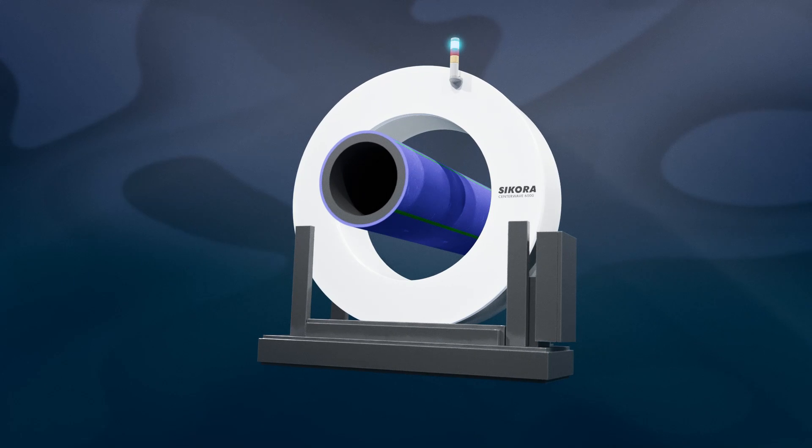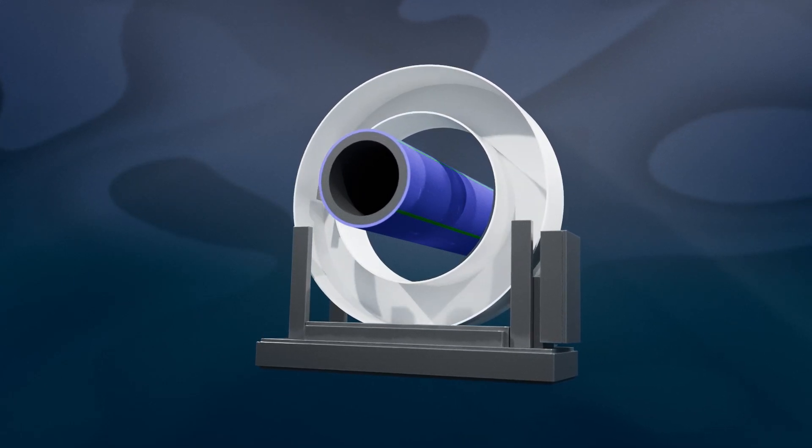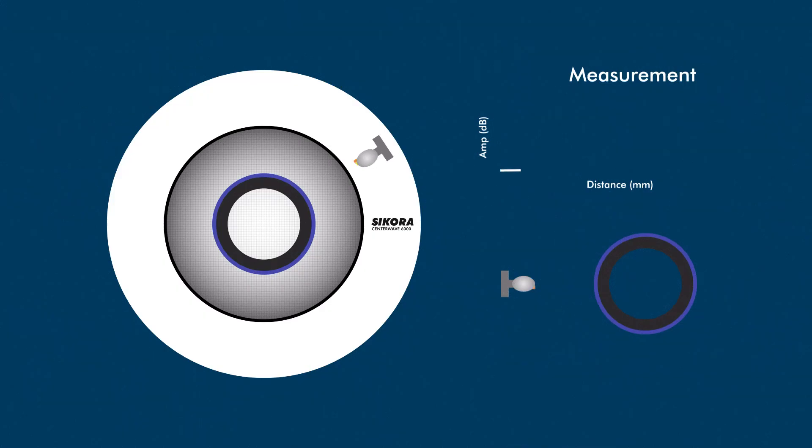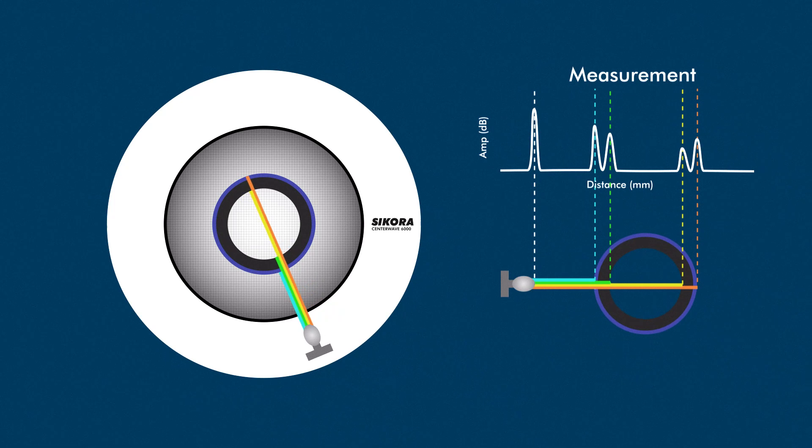The CenterWave 6000 is based on radar technology with a continuously rotating transceiver. The time and amplitude of the return signal gives a precise picture of the product's diameter and wall thickness. It also allows for dynamic shrinkage prediction and delivers values for sagging compensation.